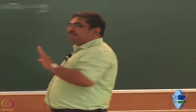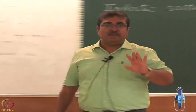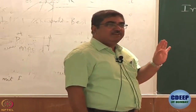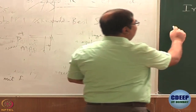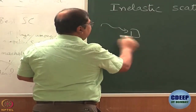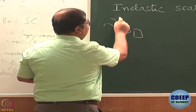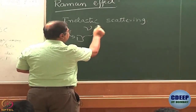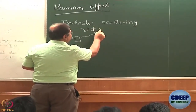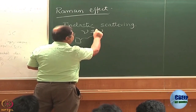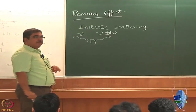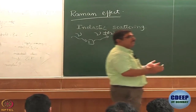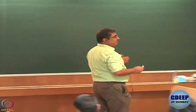Raman effect also has a predecessor in the Compton effect. Essentially you have light falling on an object with frequency nu, and the light that is scattered has frequency nu plus or minus delta nu. So there is a change in colour — that's all that is there.